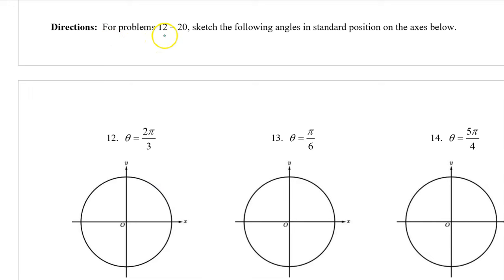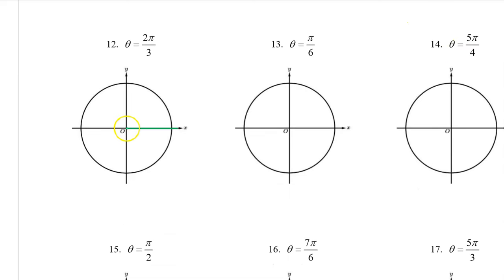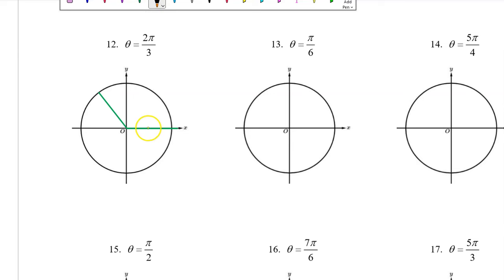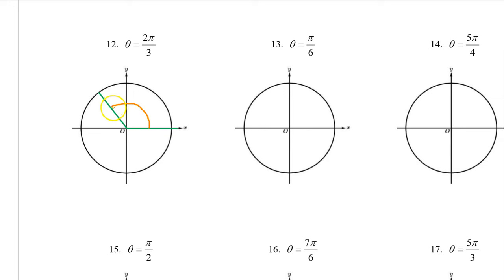For problems 12 through 20, sketch the following angles in standard position on the axes below. So pi over 3 would be right about here. Halfway around would be pi, and we could think of this as 3pi over 3. So 2pi over 3 will be one multiple before that. Let's just put the rotation in to show that this is a counterclockwise rotation. And that's number 12 for you.